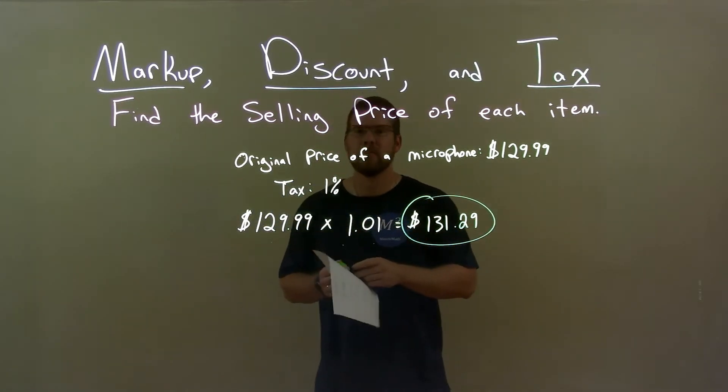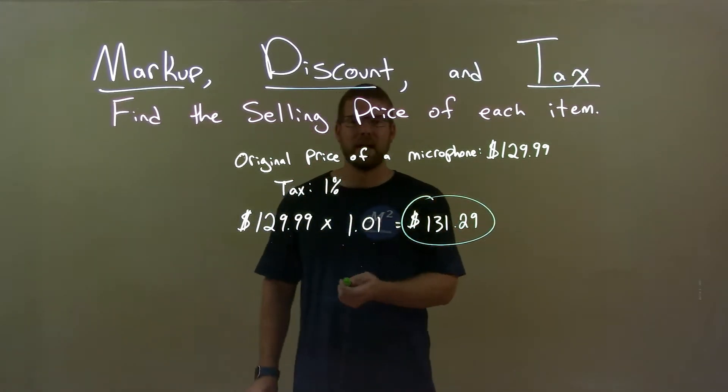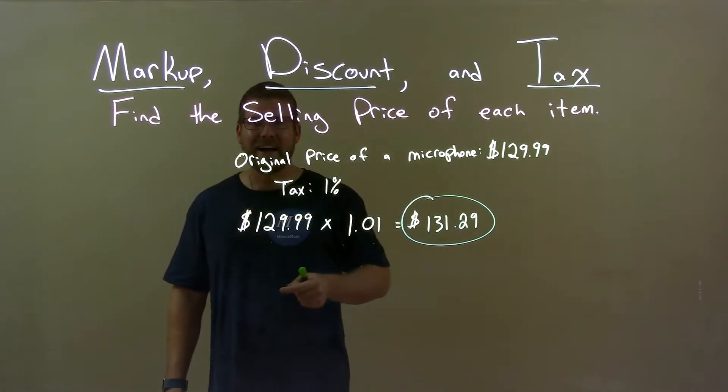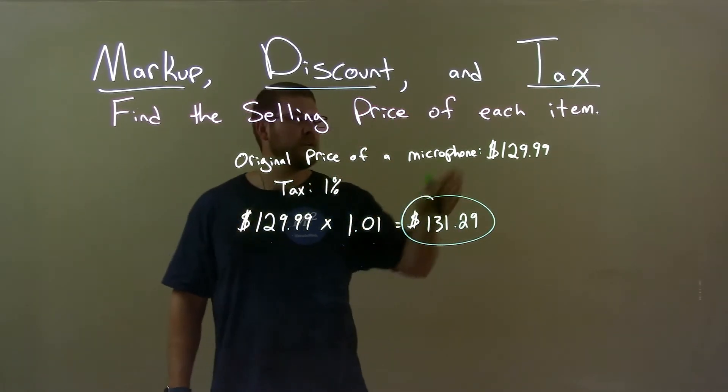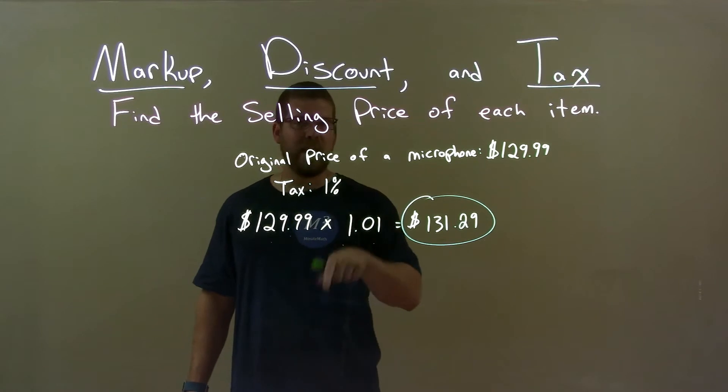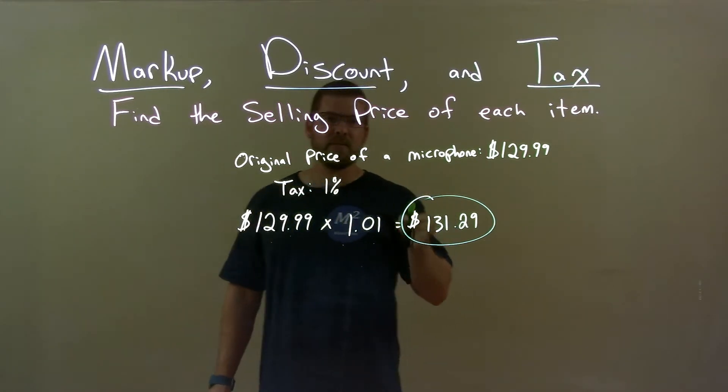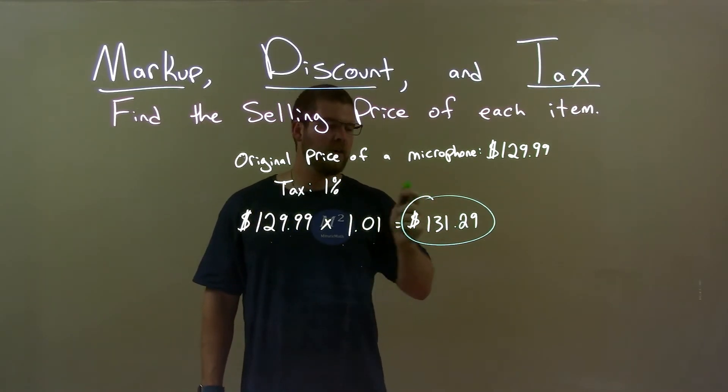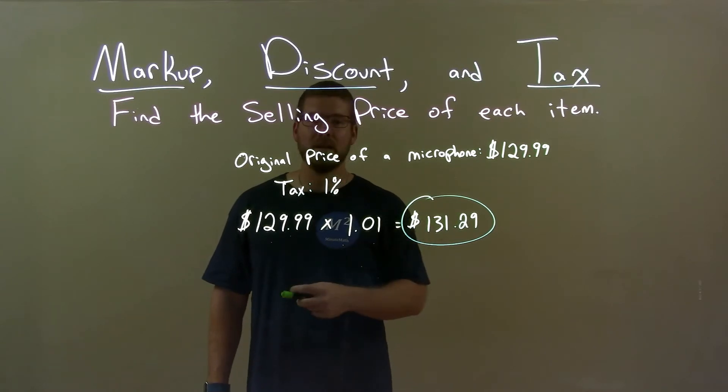So, quick recap. We're given the original price of a microphone is $129.99, and its tax is 1%. We take $129.99 and multiply that by 1.01. It gives us an after-tax sale price of $131.29.